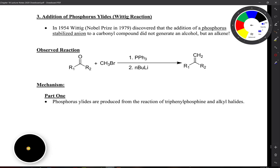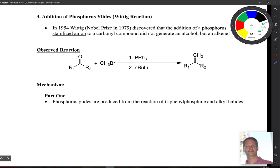One of the last reactions we're going to see for the mechanisms is the addition of phosphorus ylides. The overall observed reaction takes an aldehyde or ketone with an alkyl halide, and then we use triphenylphosphine and n-butyllithium. In the end, what this makes is an alkene.